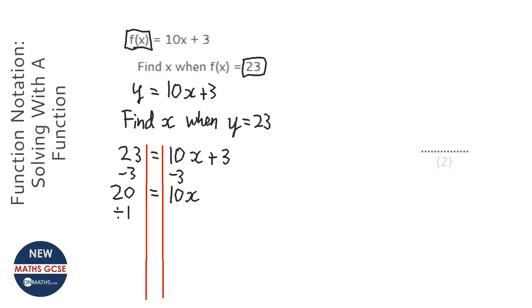Then I'm going to divide both sides by 10 to get x on its own. So x equals 2.